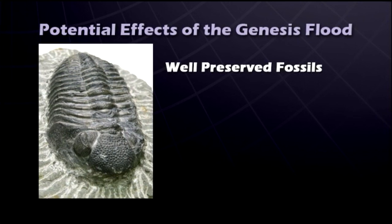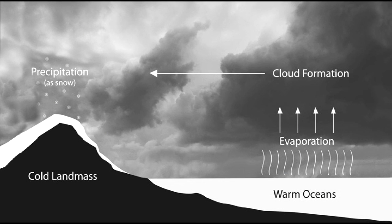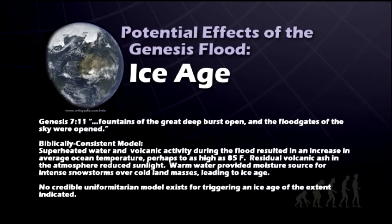Another potential effect of the flood would be the ice age. It's very hard to trigger an ice age. If the temperature on earth just begins to drop, all that will do is cause the earth to become a cold desert — there's no source of moisture. That's why Antarctica and other very cold regions get very little snow. An ice age would require very warm oceans coupled with very cold air over the land masses. That's a very reasonable expectation of what could have happened after the Genesis flood. Genesis 7:11 says 'fountains of the great deep burst open and the floodgates of the sky were open.' A biblically consistent theory could say that superheated water and volcanic activity during the flood resulted in an increase in average ocean temperature, perhaps to as high as 85 degrees Fahrenheit, with residual volcanic ash in the atmosphere reducing sunlight, and warm water providing moisture for intense snowstorms over cold land masses.